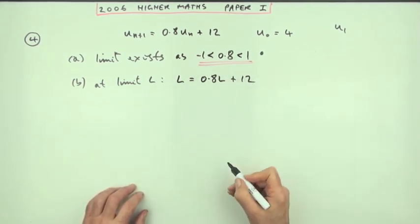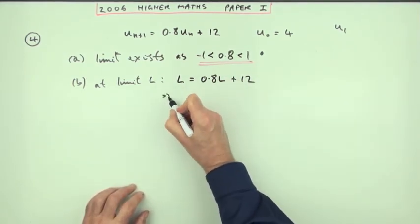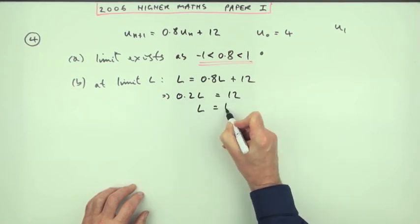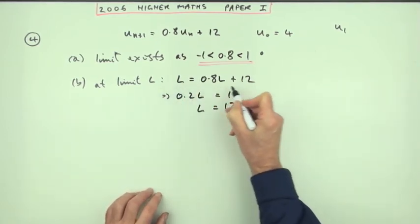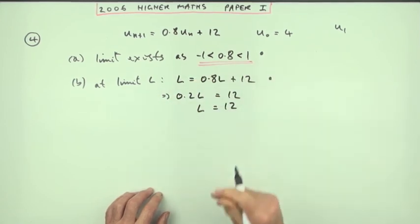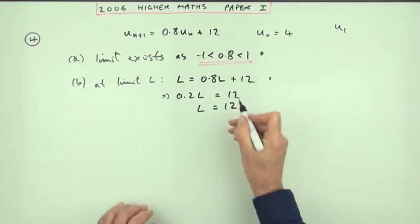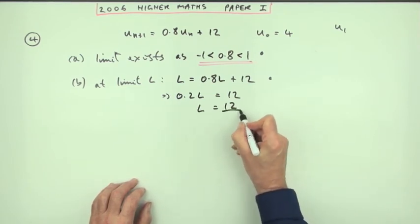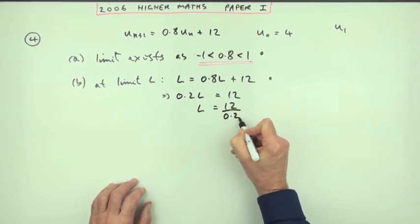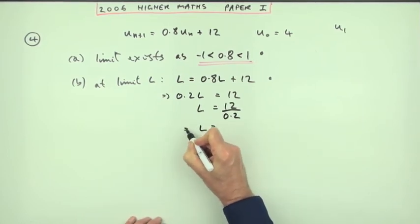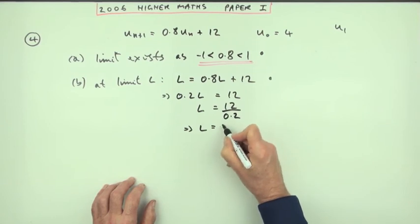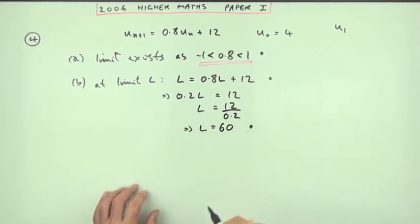And then go through the arithmetic, take that across and subtract. So that means point 2 of L equals 12. So L will be 12. That statement there is worth a mark. And then finding L gives you the final mark. So it'll be 12 divided by 0.2. So that means that the limit's going to be, 2 into 12 is 6, multiplying the top and bottom by 10 makes that 60. That's the mark for the limit.